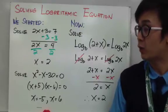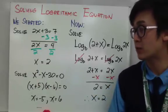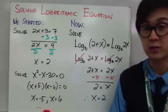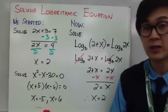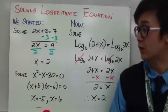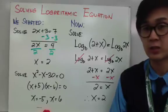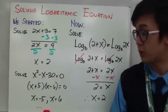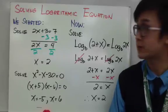For a quadratic equation, we have x squared minus x minus 30 equal to 0. We know that quadratic equation is factorable. So we factor it as x plus 5 times x minus 6 equal to 0, and using the zero product property, x is equal to negative 5 and x is equal to 6.